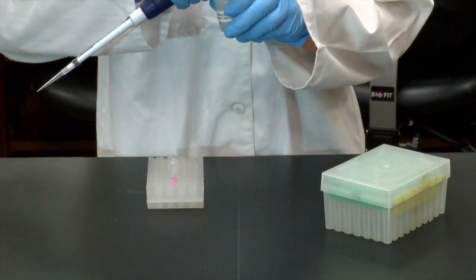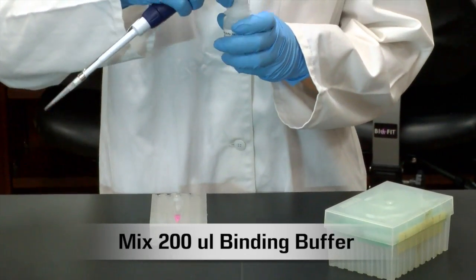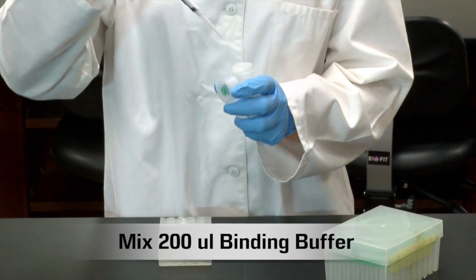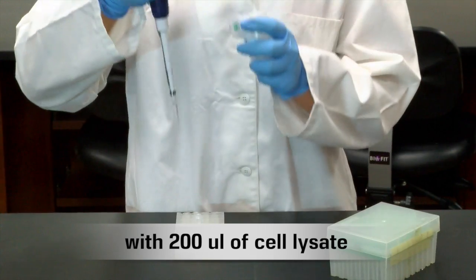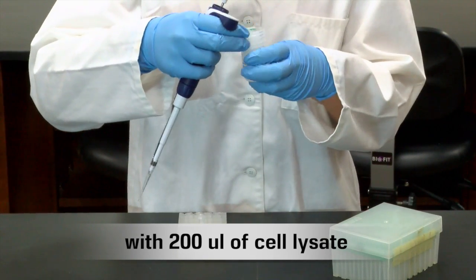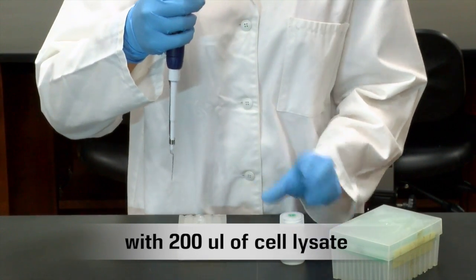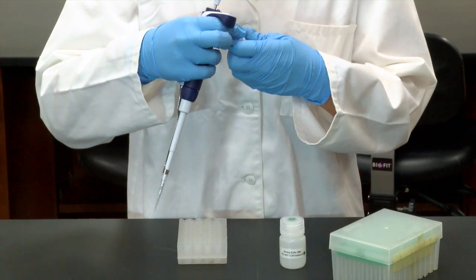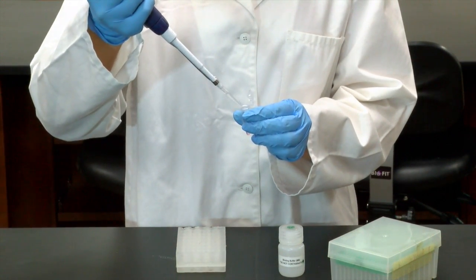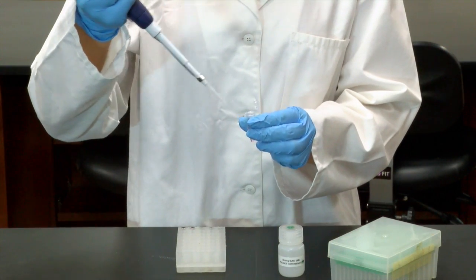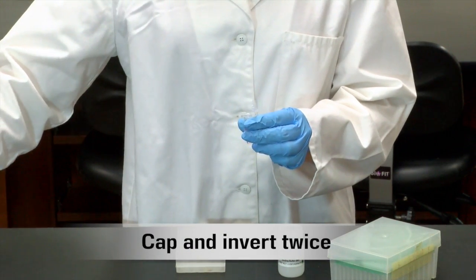One partner should prepare the protein sample. Obtain the microfuge tube containing the supernatant from the bacterial cell lysis. Add 200 mL of the binding buffer to the 200 mL supernatant. Cap and invert twice to mix well.